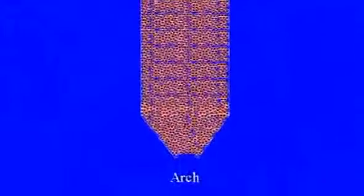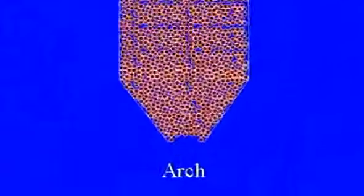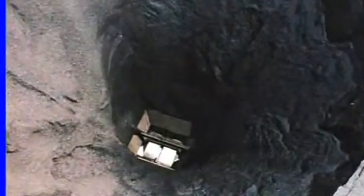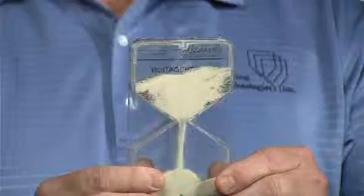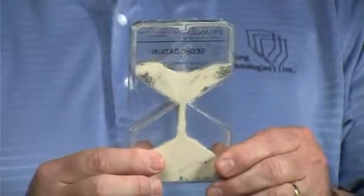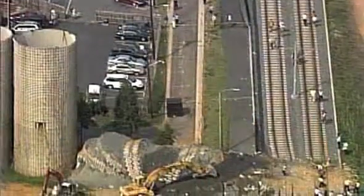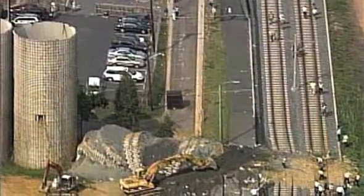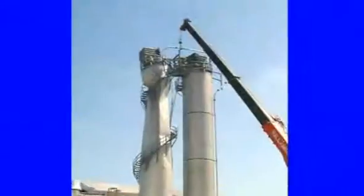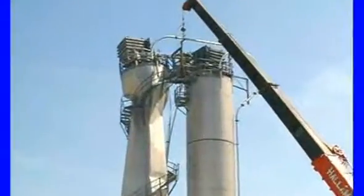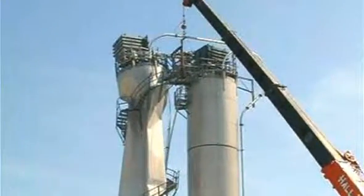Topics covered in this lecture include flow problems due to arching and rat holing, flooding issues, limiting discharge rates, and segregation problems. These issues can have devastating results such as limiting live storage, caking and spoilage, and even potential structural problems with your silo.